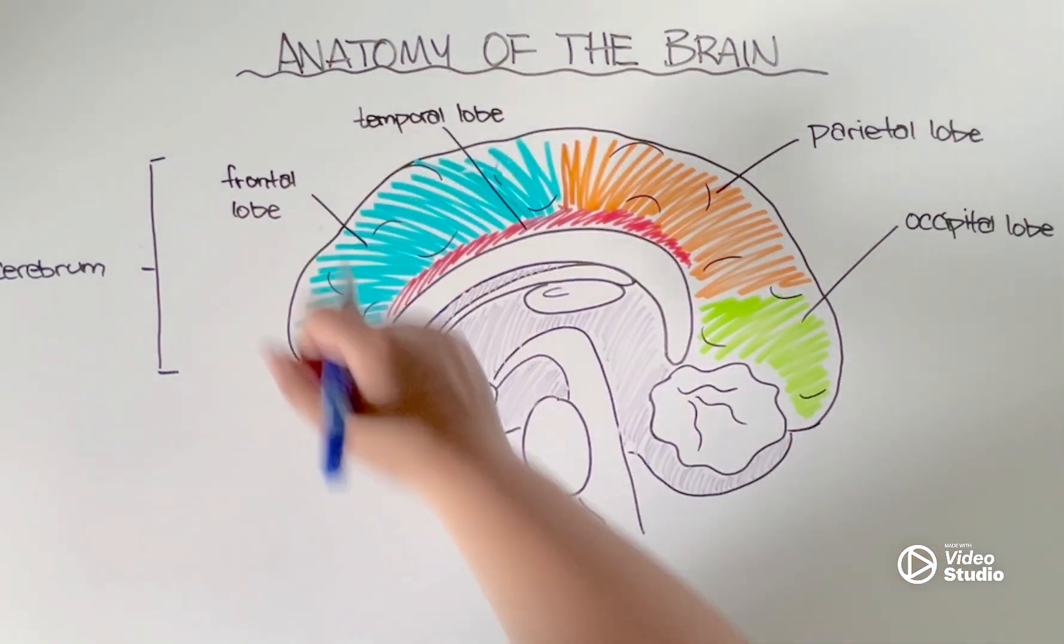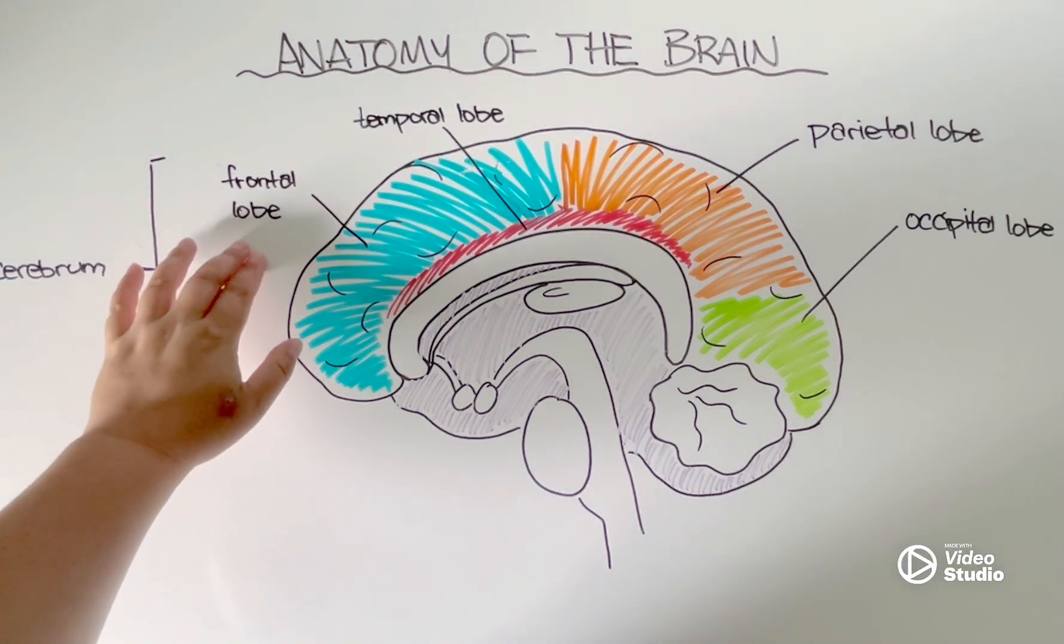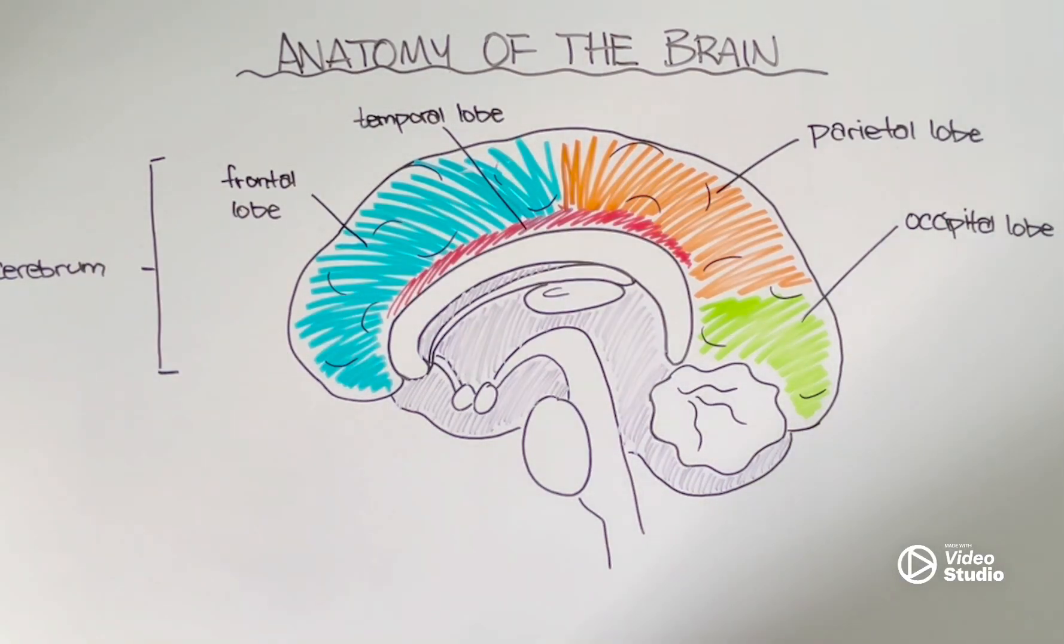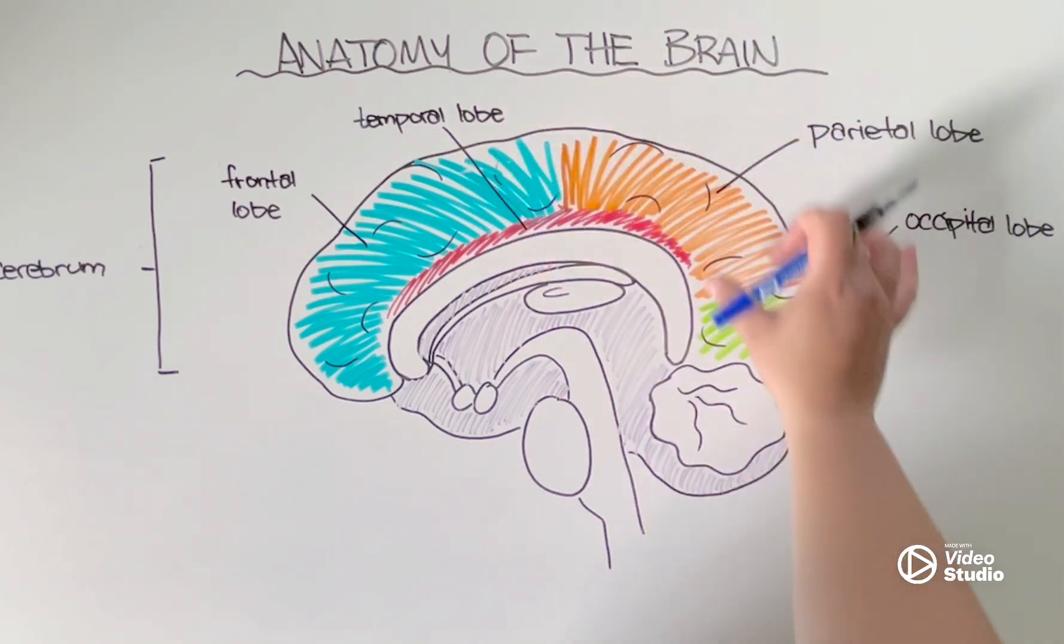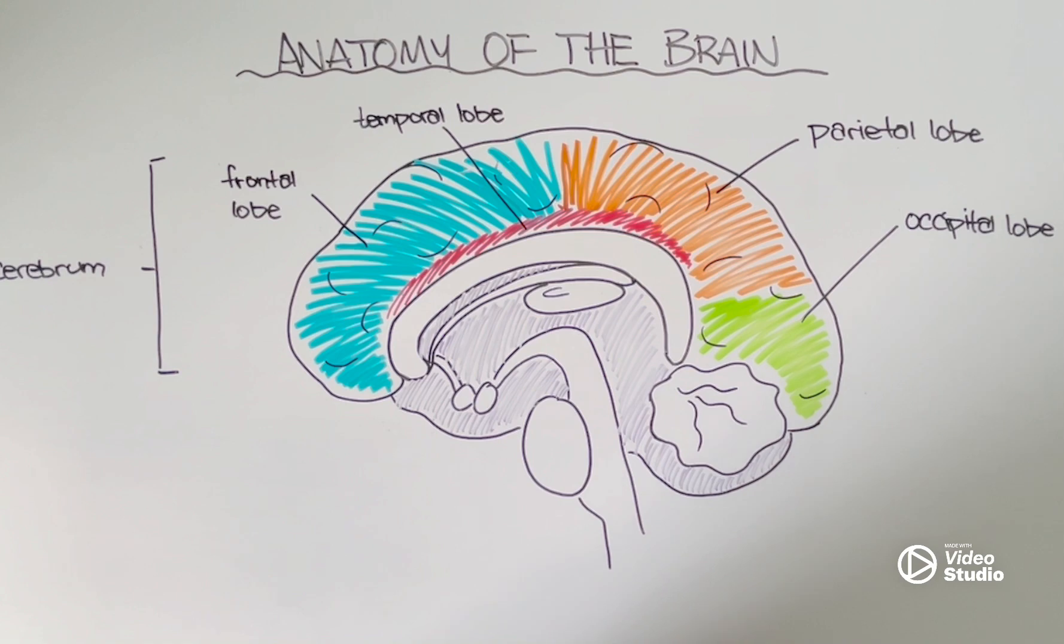So, those are the four lobes that make up the cerebrum. And then, as we go deeper into the center of our brain, we can also identify a few other key structures that are responsible for more basic functioning. So, whereas these parts of the cerebrum act for more advanced functioning, such as problem-solving, learning, and making sense of sensory information, the other structures control more things like breathing, heart rate, etc.